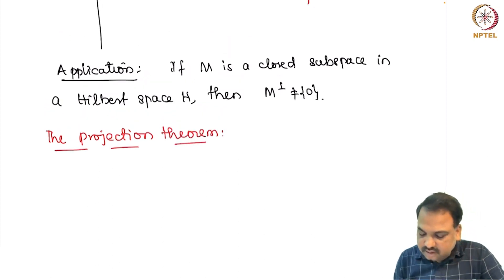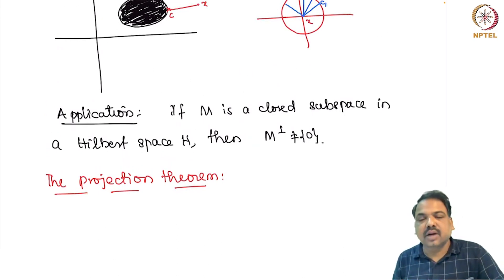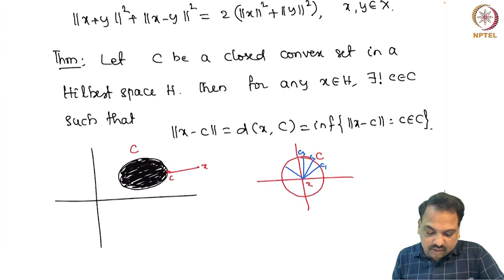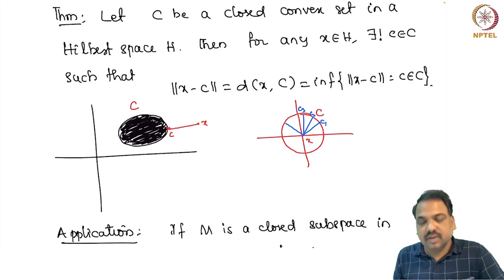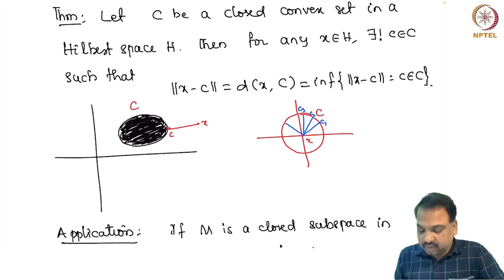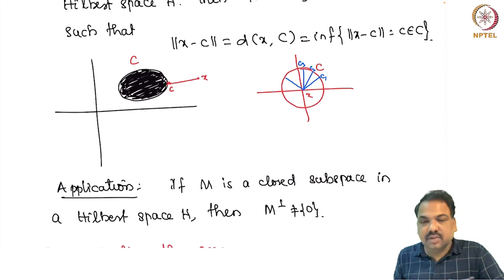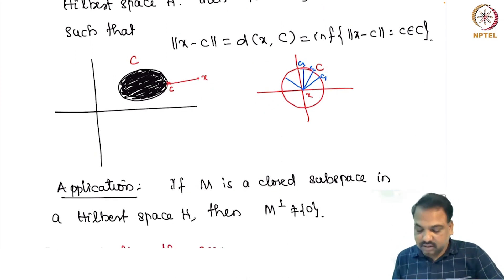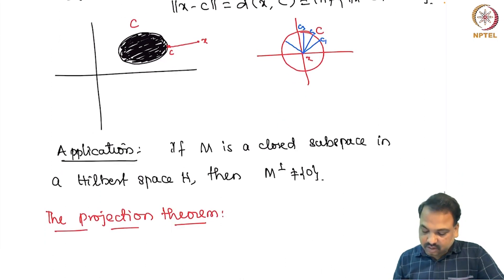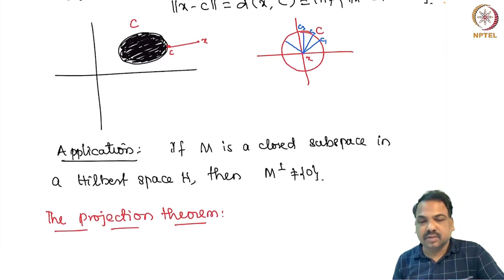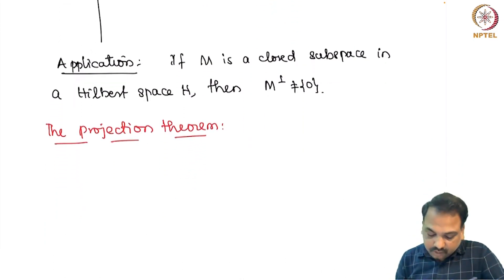To show the orthogonal complement of M is non-zero, we use the nearest point theorem. We take C to be the closed convex set M. Since M is a closed subspace it is always convex, so we can apply the earlier result. Using this we can prove the Projection Theorem.